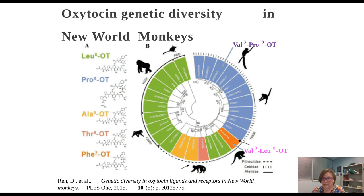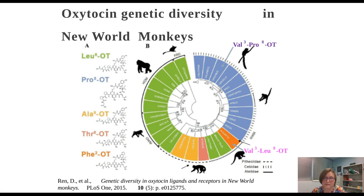In Atelidae, there is quite a range, including val-3-leu-8 oxytocin in a howler monkey species, phenylalanine oxytocin, threonine oxytocin, and leucine-8 oxytocin. In Cebidae, we see alanine-8 oxytocin and other various forms. In old world monkeys, hominidae, and proto-lemurs, leucine oxytocin is entirely expressed.